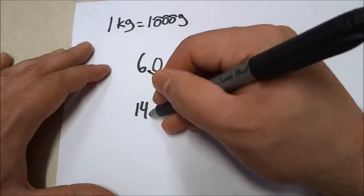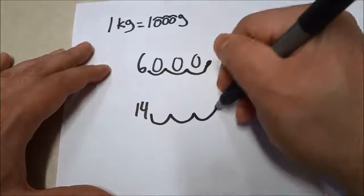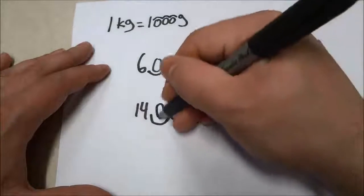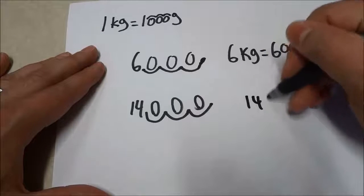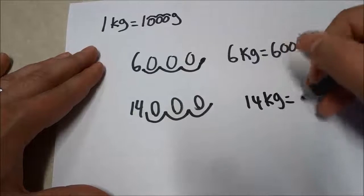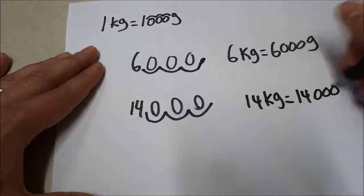And we're going to move it three spaces to the right: one, two, three. Fill those spaces in with zeros. And you can see that the number is 14,000. So 14 kilograms is equal to 14,000 grams.